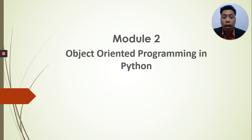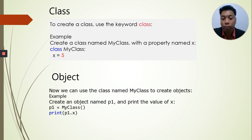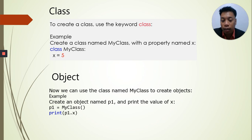To begin with, let's start by discussing class and object. To create a class in Python, we use the keyword class. In our example, we created a class named MyClass, and it has a property named X, which has the value of 5. Now, when we have a class, we can use it in our object. We created an object named P1, and we used the class MyClass. So we write P1 equals MyClass, and then we print P1.x, which is the property in the class MyClass.